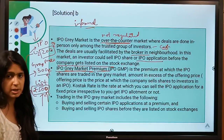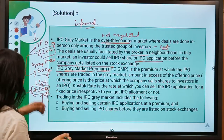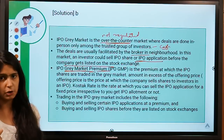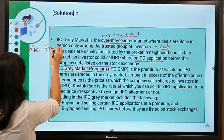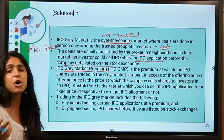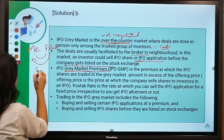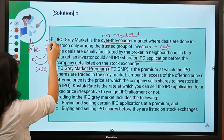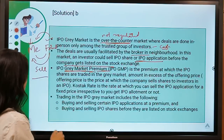IPO applications are also sold in the gray market. For example, if I want to increase my chances of getting shares allotted, I could buy my friend's IPO application form. If shares are allotted to my friend's application, they belong to me since I purchased it. Applications are also sold at a premium in the gray market.